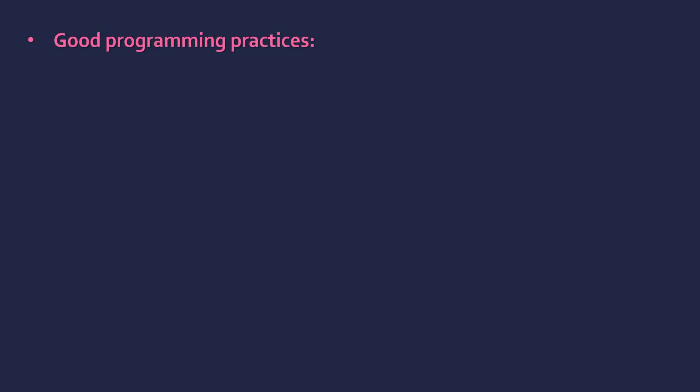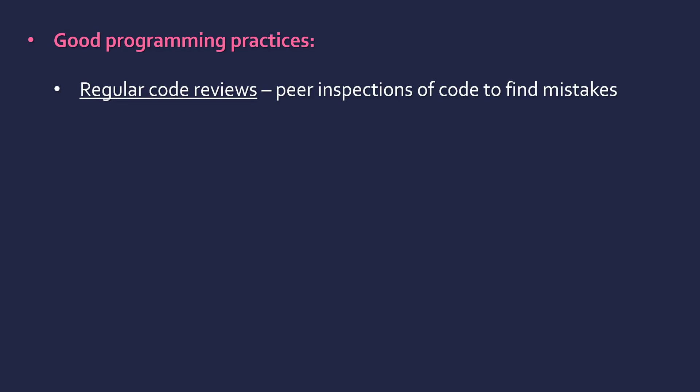A lot of vulnerabilities come from code, so let's mention some good practices to reduce this. Having regular code reviews is very important if you're working in a team or for a big company. These are peer inspections of code where people share their code and get others to look through it to find mistakes. Often you won't notice mistakes in your own code — especially if the code is working okay — but they might be a vulnerability in a certain case that someone else might spot.